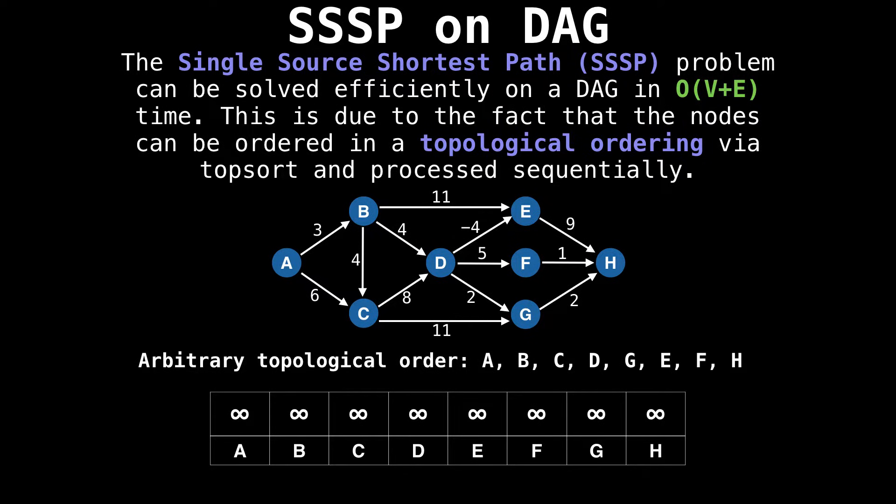Below I have selected an arbitrary topological ordering, which is the order we will process the nodes in this graph. I'm also displaying the current best distance to each node at the bottom of the screen, which are all currently set to infinity.